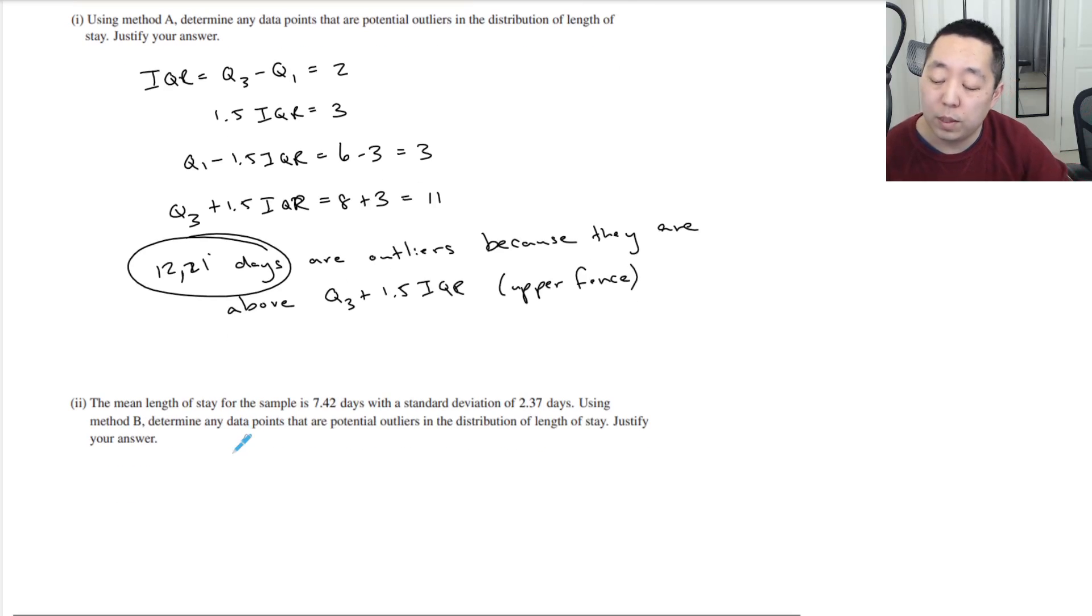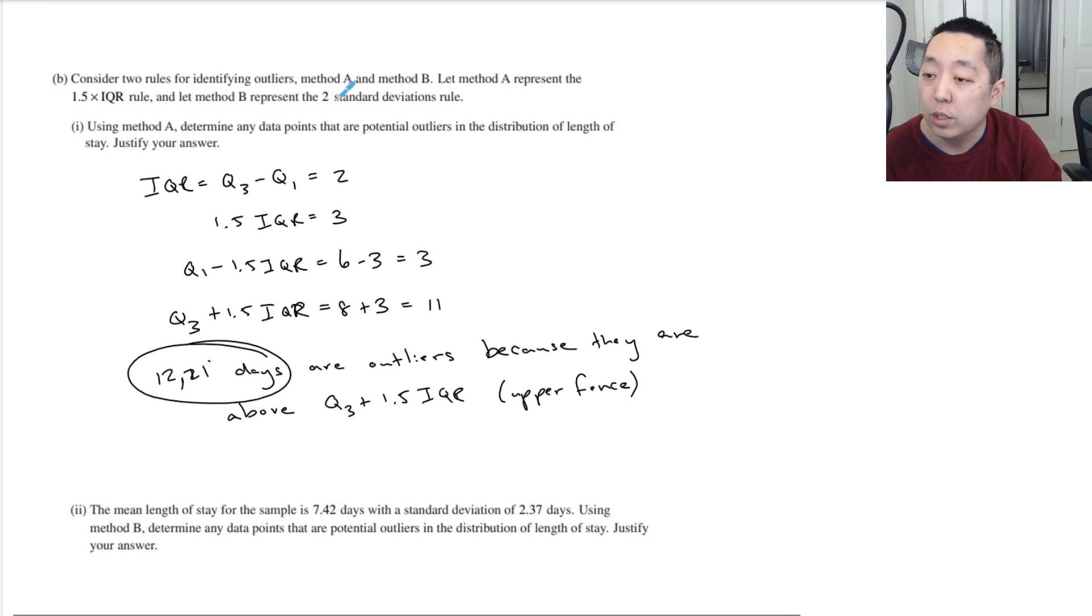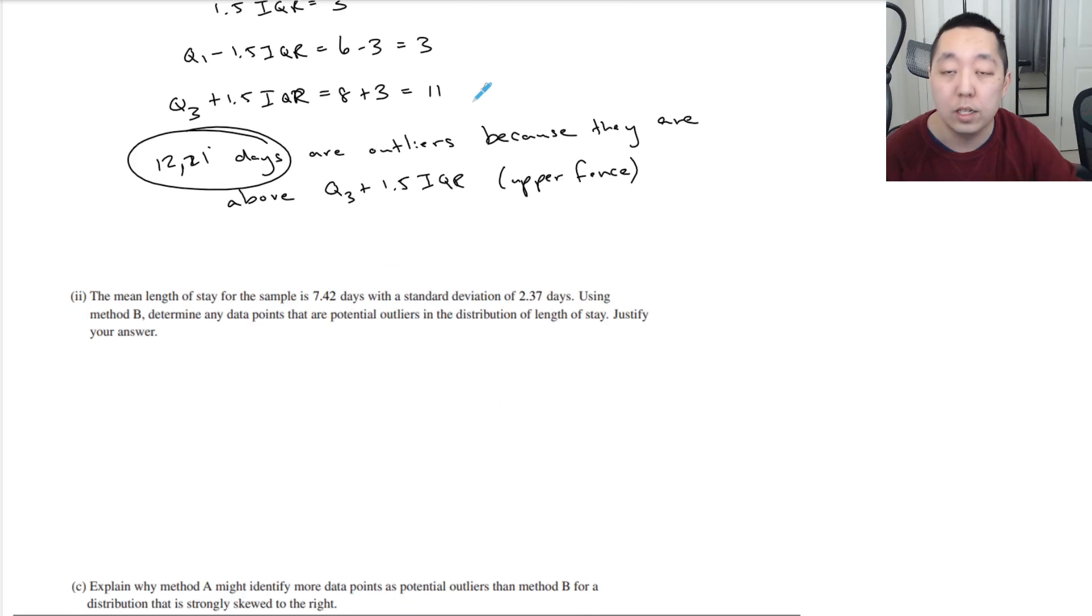The mean length of stay for the sample is 7.42 days with a standard deviation of 2.37. Using method B, determine any data points that are potential outliers. And they said potential outliers were two standard deviations rule. That means if we're beyond two standard deviations from the mean. So if we do 7.42 plus or minus two times the standard deviations, we're talking about a range of 7.42 minus two times 2.37, which is 2.68, to 7.42 plus two times 2.37, which is 12.16.